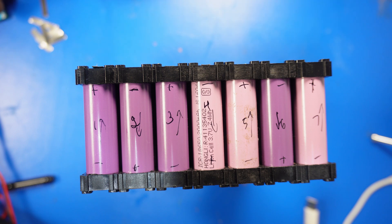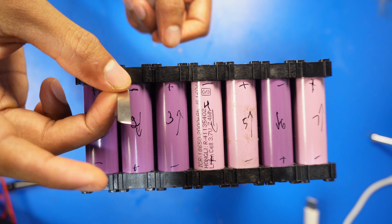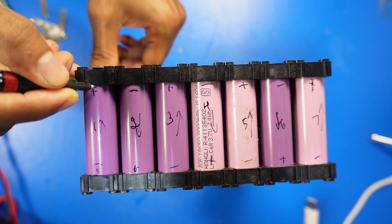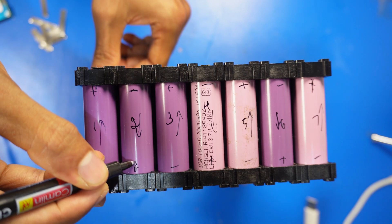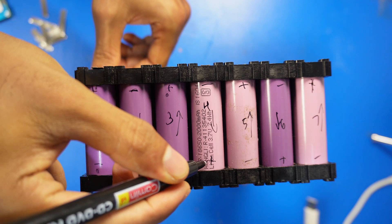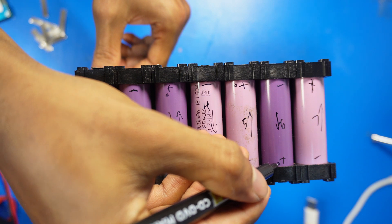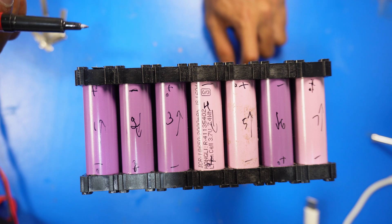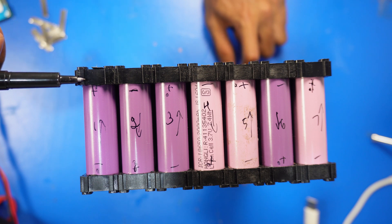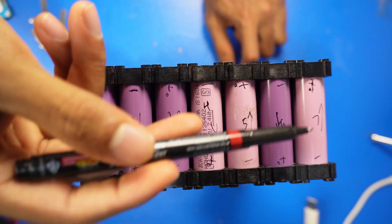In order not to damage the batteries you need to connect small extensions like this. Negative of the first cell to positive of the first cell, then positive of the second cell, positive of the third cell, positive of the fourth cell, positive of the fifth cell, positive of the sixth cell, positive of the seventh cell. So in total you will have to connect eight extensions: one, two, three, four, five, six, seven, eight.